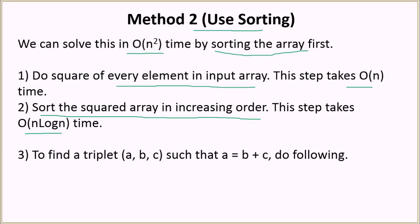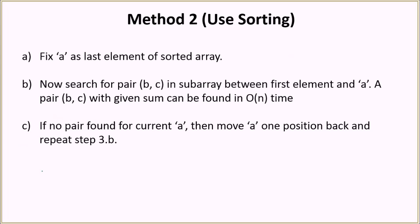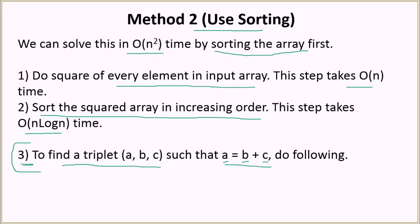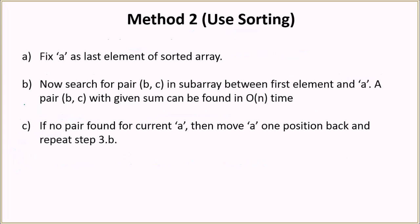After sorting, we have a sorted array of squared values. The remaining problem reduces to finding a triplet a, b, c such that b plus c equals a — the sum of two numbers equals the third. For step three, we fix a as the last element of the sorted array, which is the largest element, and then try to find a pair b and c in the remaining subarray from the first element up to just before a.